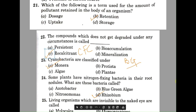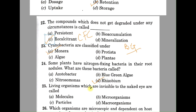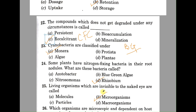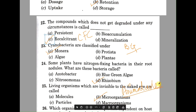Question number twenty-five: living organisms which are invisible to the naked eye are called — A: molecules, B: microorganisms, C: particles, D: macro-organisms. The correct answer is B, microorganisms. The first microorganism was observed and reported by Anton van Leeuwenhoek, who gave them the term 'animalcules.' These questions will help you in the preparation of your exams. Best wishes and take care — stay tuned.